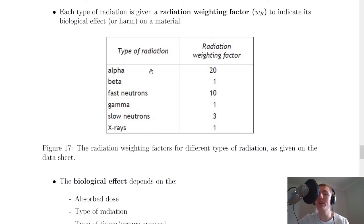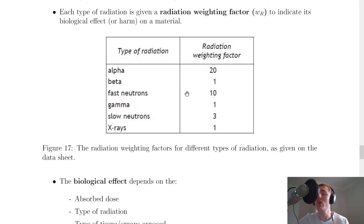Alpha radiation has a radiation weighting factor of 20, whereas beta has a factor of 1, and gamma has 1 as well. Fast neutrons, for example, have a radiation weighting factor of 10. So in a sense, based on the type of radiation alone, alpha radiation will be 20 times more damaging than beta or gamma radiation.